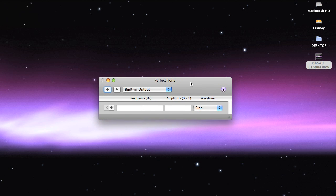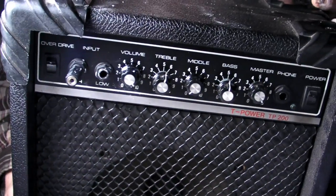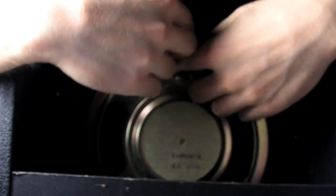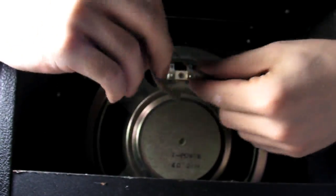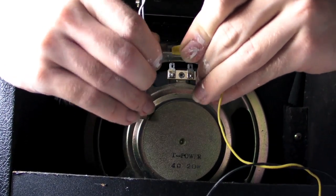To generate my frequency signals, I used a program called Perfect Tone on my Mac. I then ran my laptop's output into an old guitar amp. I then connected the guitar amp's outputs to my modded subwoofer.